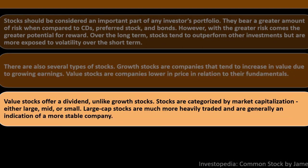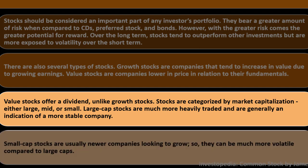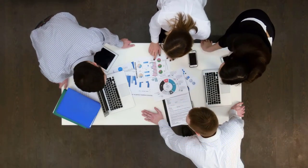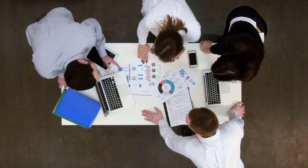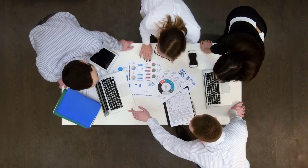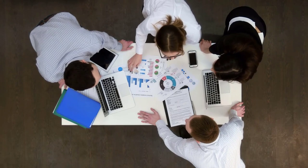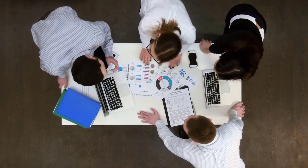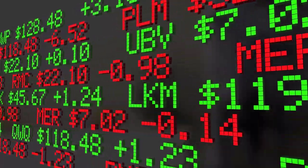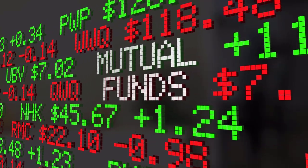Value stocks offer a dividend unlike growth stocks. Stocks are also categorized by market capitalization: large, mid, or small cap. Large cap stocks are more heavily traded and generally indicate a more stable company. Small cap stocks are usually newer companies looking to grow and can be more volatile compared to large caps. Your objective is to match these stock categories to your time horizon and overall portfolio mix, potentially using tools like targeted mutual funds that can shift allocation over your savings time horizon.